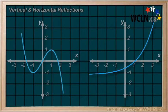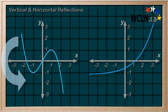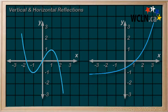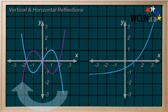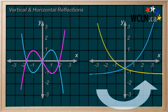So let's switch over to horizontal reflections. And as you might predict, if a vertical reflection is a reflection around the x axis, then a horizontal reflection would be a reflection around the y axis, like this, or like this.